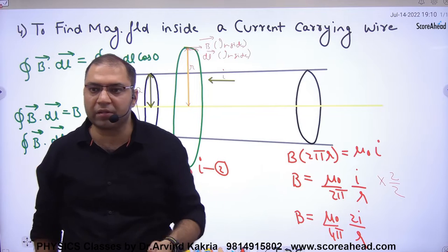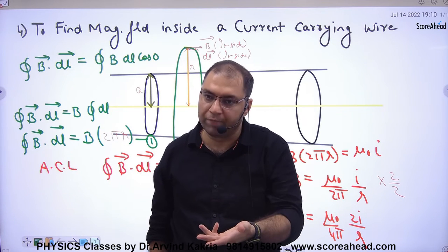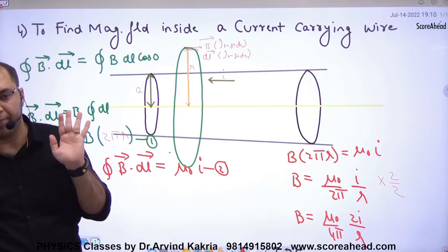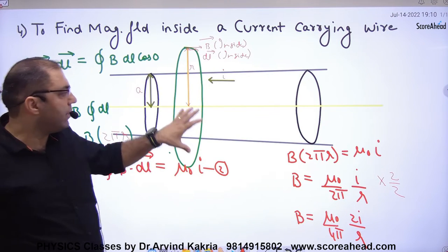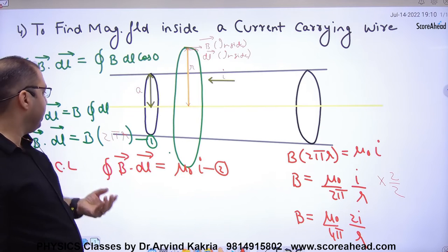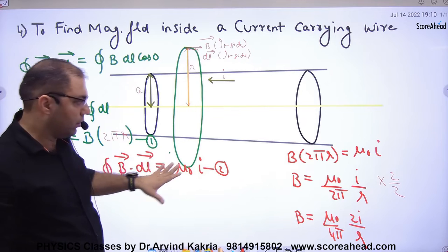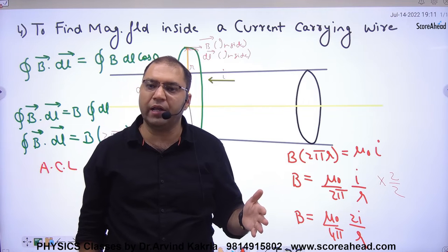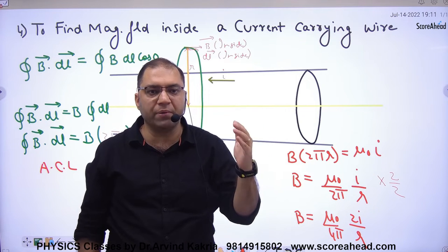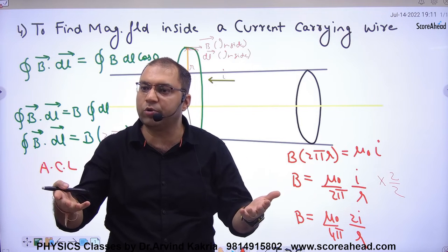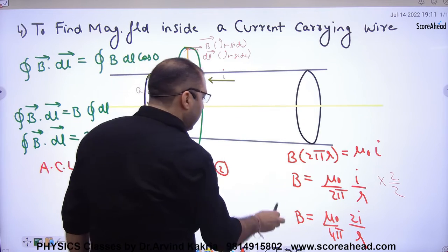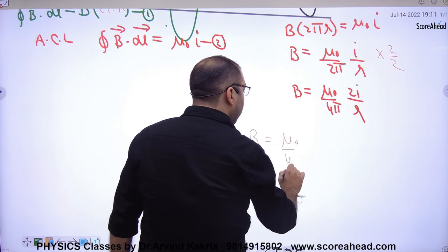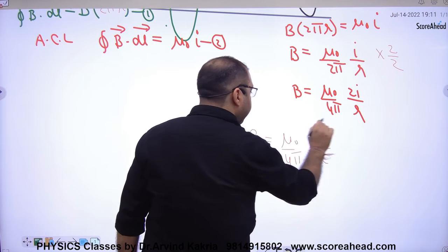This means that whether the wire is thin or thick, if the point is outside the wire, the formula remains the same — it will not change. So B × 2πr = μ₀ × total current I. If you want the value of B at the surface, put small r equal to A, giving B = μ₀/4π × 2I/A.